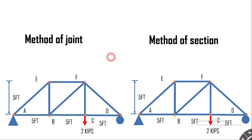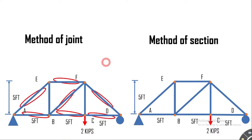In the previous lecture we talked about method of joints. Now we are going to look at another method of analyzing determinate truss structures: the method of sections. If you want to analyze each and every member of the truss structure, you use the method of joints. However, if you want to determine the member force within a specific member, you use the method of sections.